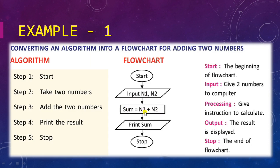Suppose n1 has a value 10 and n2 has a value 20, so 10 plus 20 equals 30. The value 30 is assigned to the variable sum. Then we need to print the result. Again for output we use the parallelogram to print the sum. After everything is done we use stop, and for stop we use the oval shape.